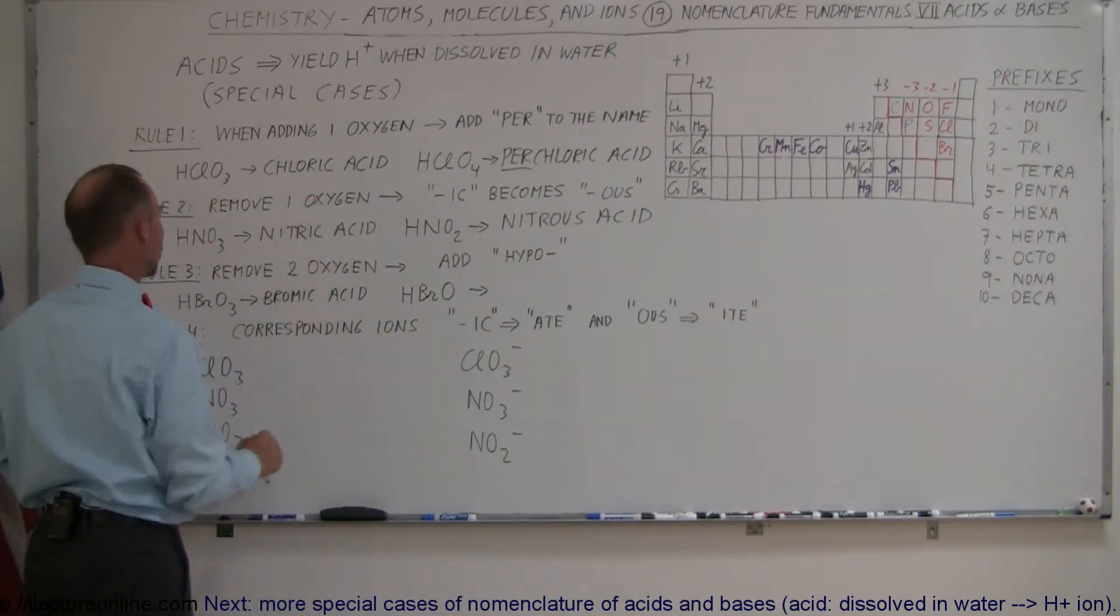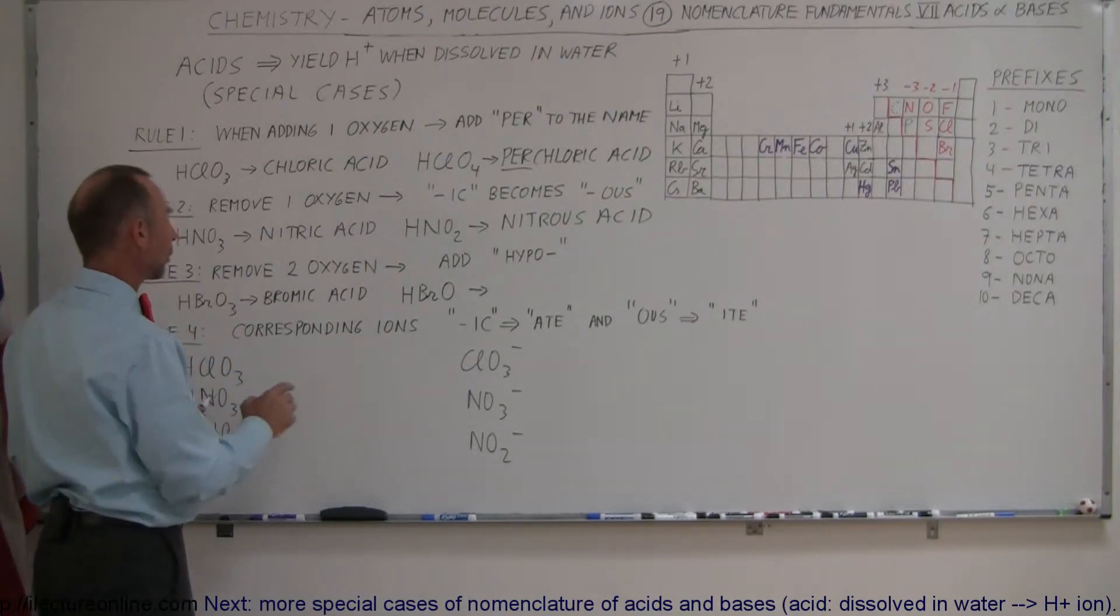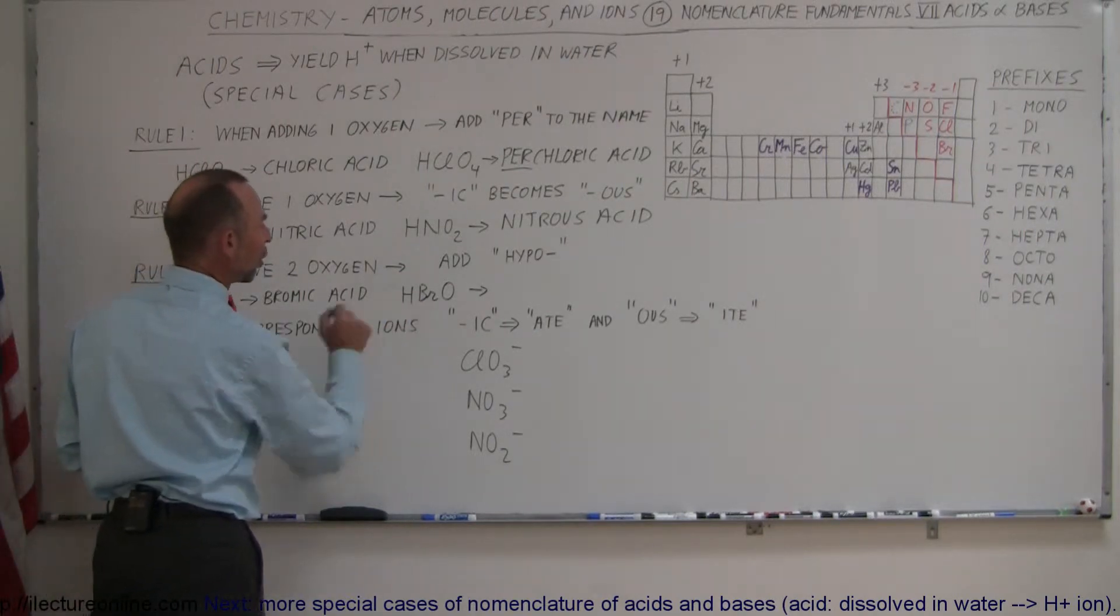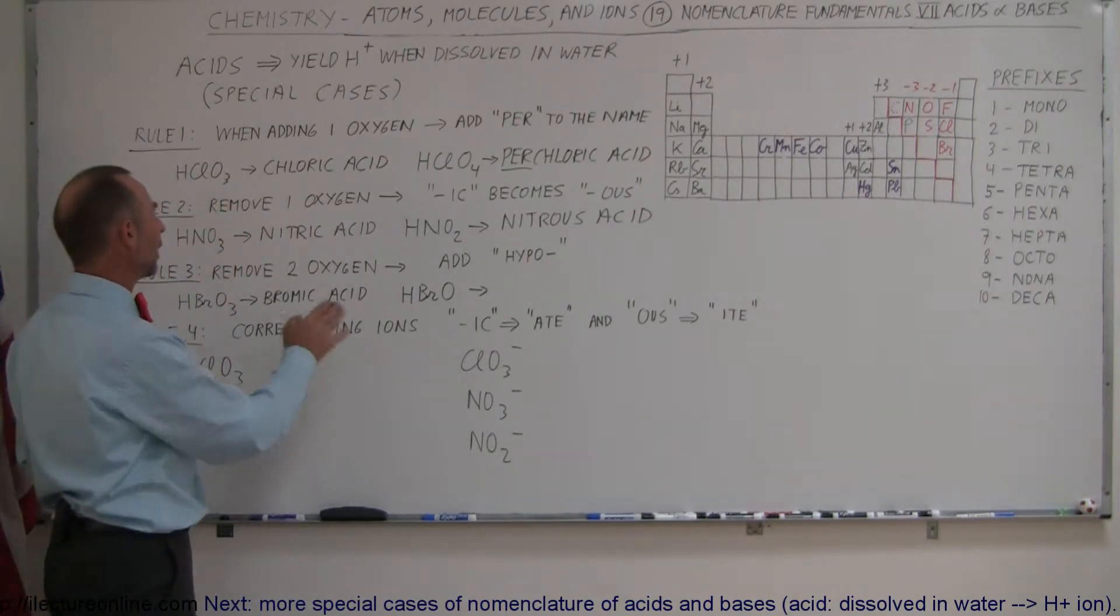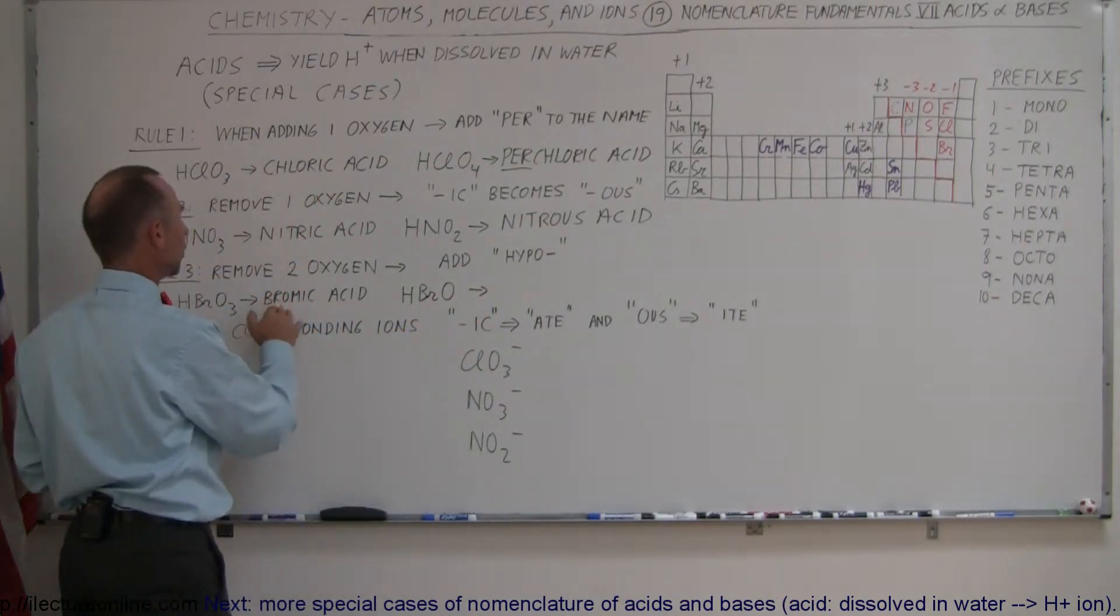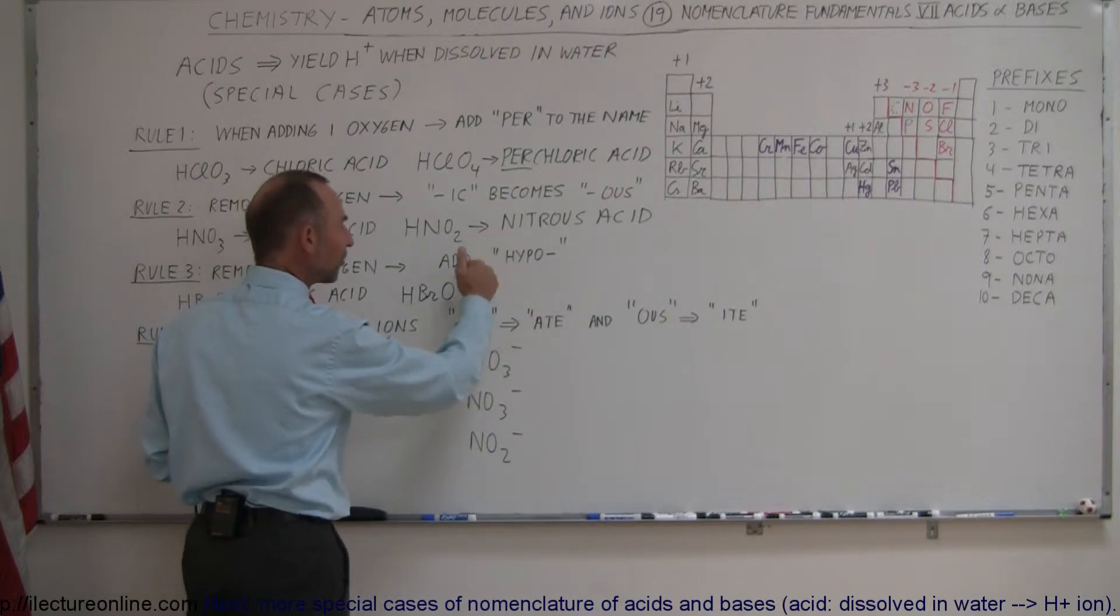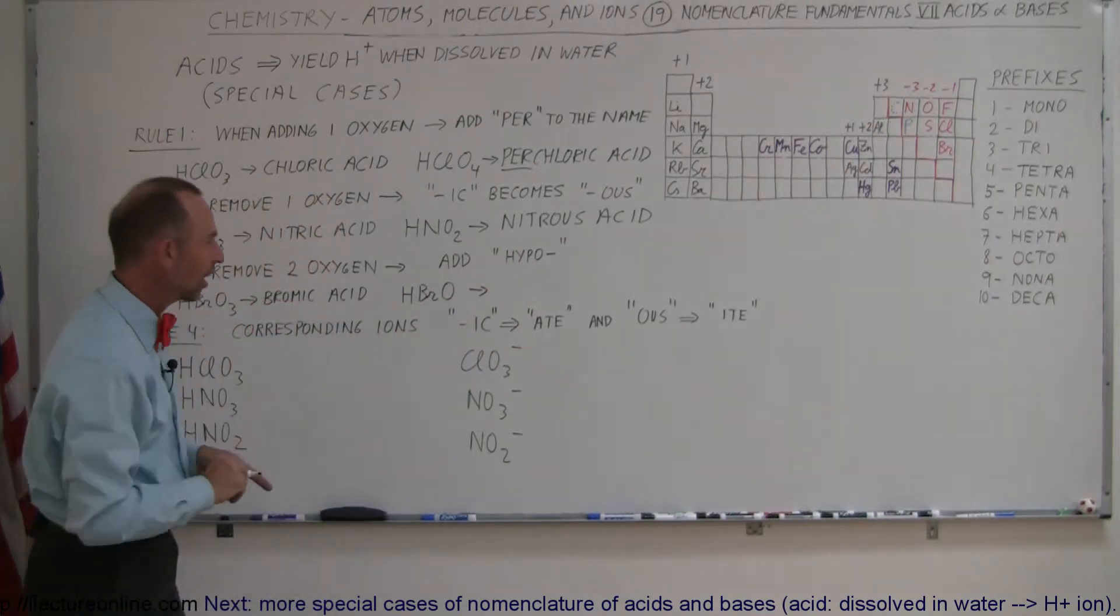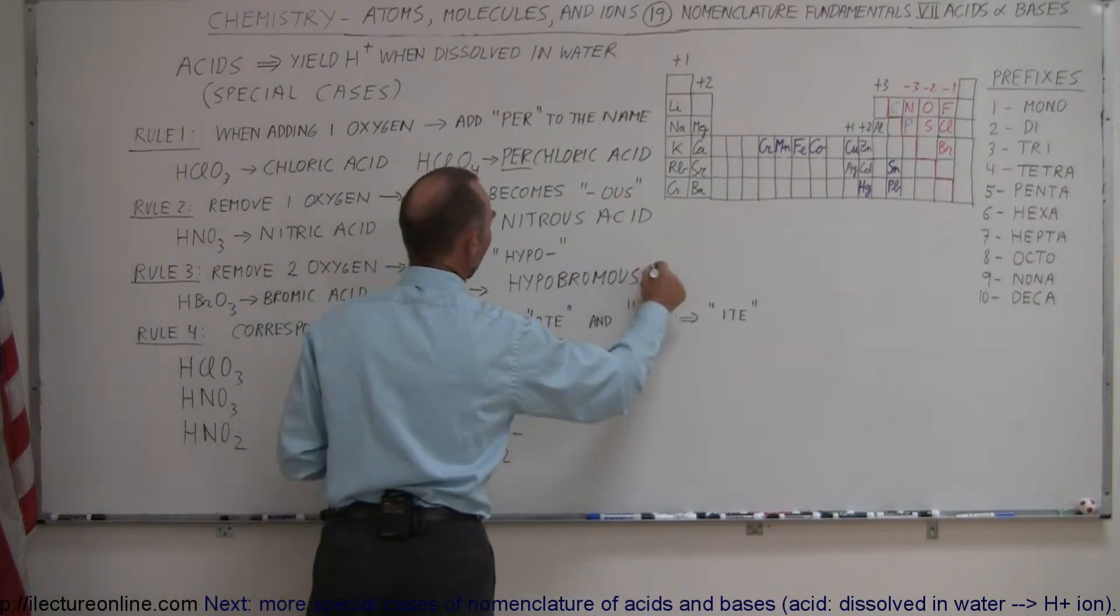Here we remove two oxygens. For example, we have bromic acid, HBrO3, and now we're going to find a different acid, HBrO. Well, there's two oxygens removed. So first of all, one oxygen would call it -ous instead of -ic, so we call it bromous acid. But then we also have to add 'hypo' in front, because now we know there's a second oxygen missing. So we call that hypobromous acid.